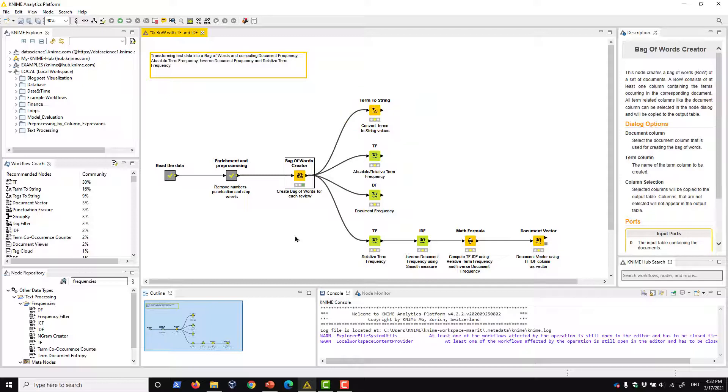The next step is to calculate frequencies based on the bag of words. The frequencies tell us which words are descriptive of the content of a single document, or respectively, the entire corpus.